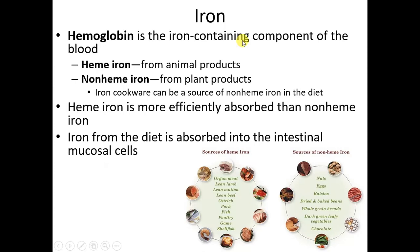Iron is found in every cell of the human body. We talk a lot about iron in hemoglobin and myoglobin. Hemoglobin is the iron-containing component of the blood. We will also focus on the forms of iron because they're very important in terms of their bioavailability. Heme iron — remember hemoglobin, red blood cells — heme iron is found in animal products, not milk, often referred to as animal flesh. Non-heme iron comes from plant products. Heme iron is more efficiently absorbed, and non-heme iron bioavailability is impacted by other foods eaten at the same time.